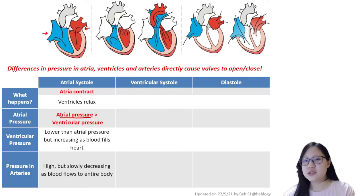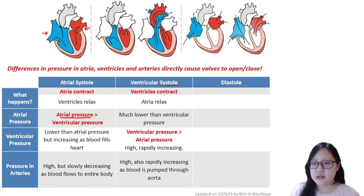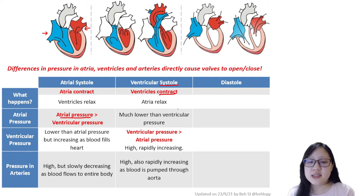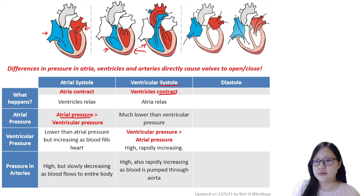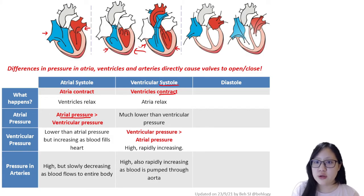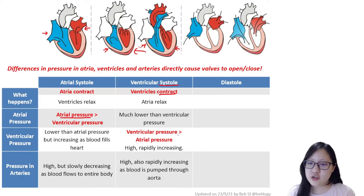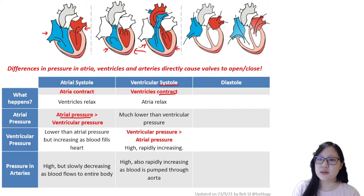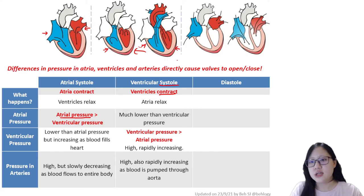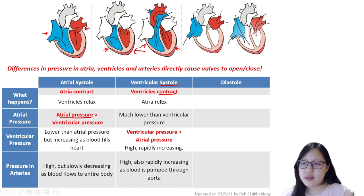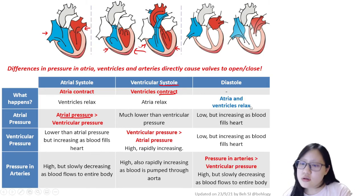During ventricular systole, the ventricles contract, so ventricular pressure is much higher than atrial pressure. This causes the AV valves to close. At a certain point, ventricular pressure also exceeds arterial pressure, causing the semilunar valves to open and blood to flow from the ventricles into the arteries.